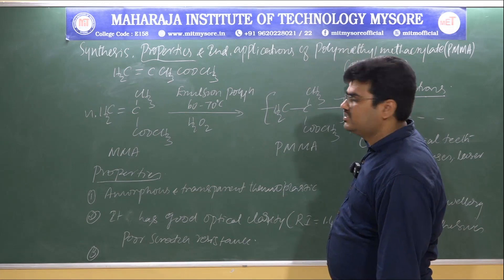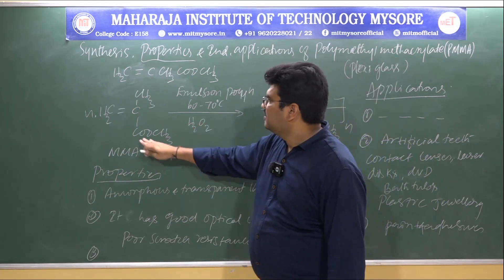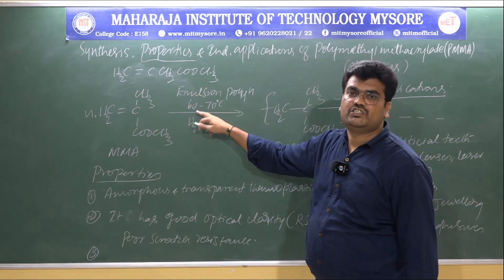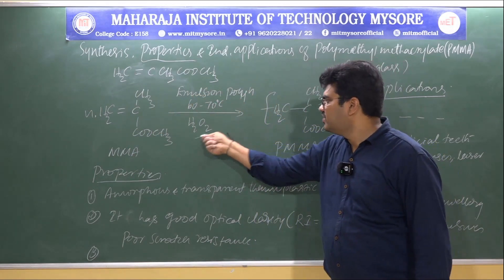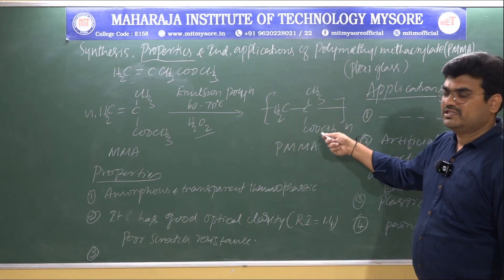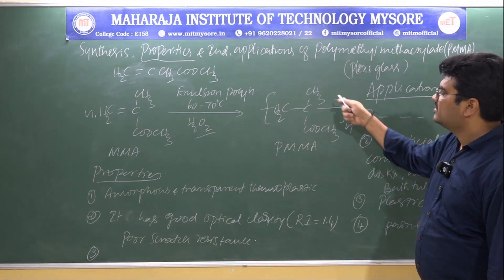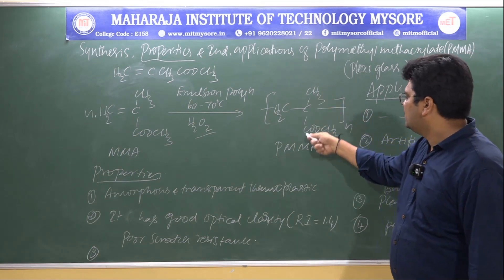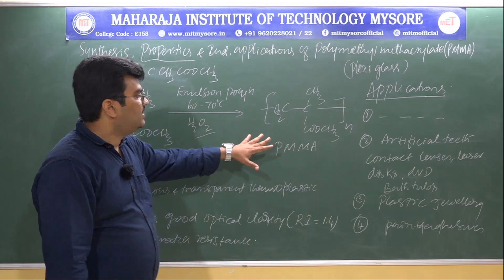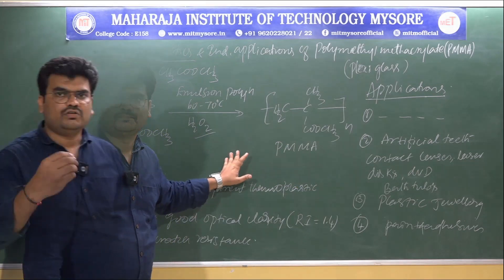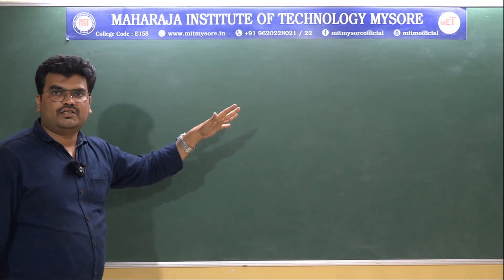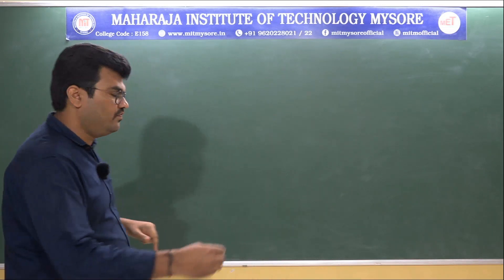In summary, the trade name of PMMA is plexiglass. It is prepared by subjecting methyl methacrylate to emulsion polymerization at 60 to 70°C in the presence of hydrogen peroxide, yielding polymethyl methacrylate. Next, let us see the synthesis, properties, and industrial applications of Teflon.